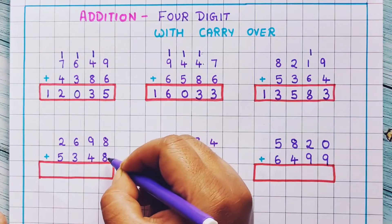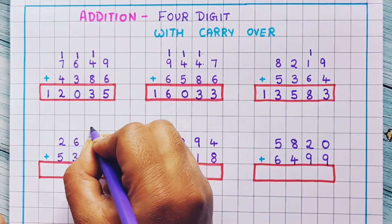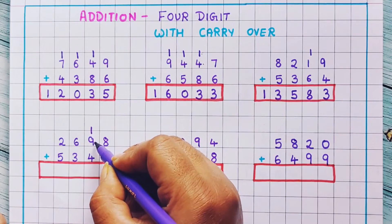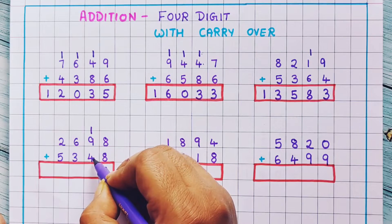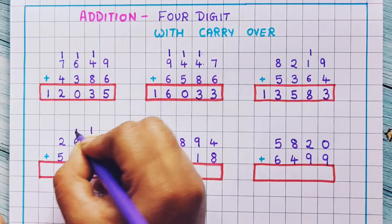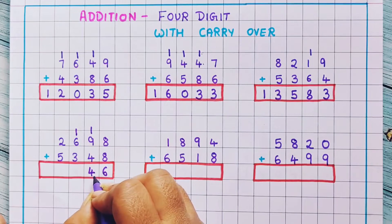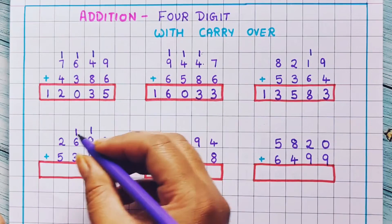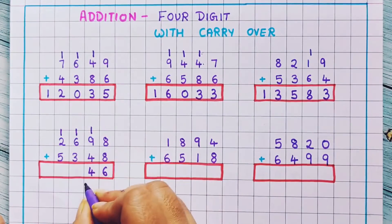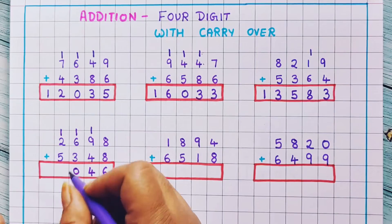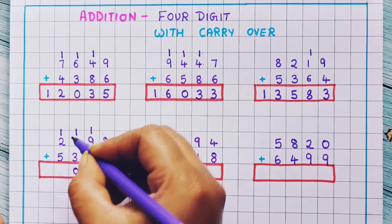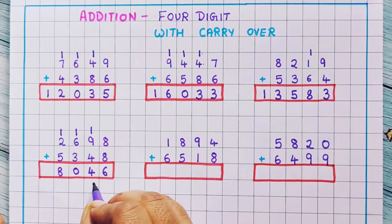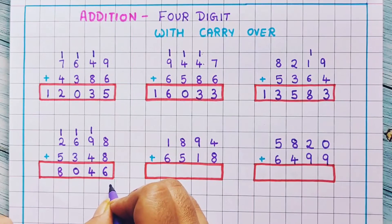Now 8 plus 8 is 16, so let's write 1 here and 6 here. Now 1 plus 9 is 10, and 10 plus 4 is 14, so let's write 14 here. Now 1 plus 6 is 7, and 7 plus 3 is 10, so let's write 10 here. Now 1 plus 2 is 3, and 3 plus 5 is 8. So the answer is 8,046.